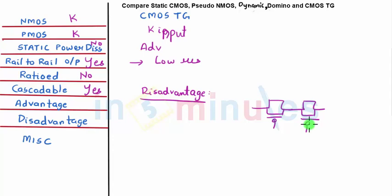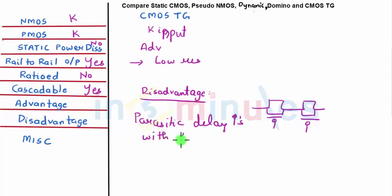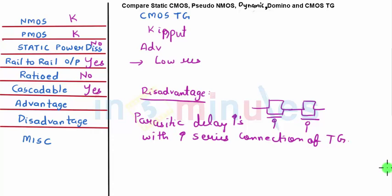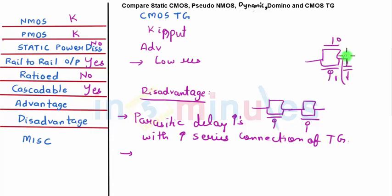Because of this internal diffusion capacitance, you cannot connect more than two transmission gates in series. This can be fully understood only when one understands how to make the layout. For now, note that parasitic delay increases with an increase in series connection of transmission gates — that's one drawback.